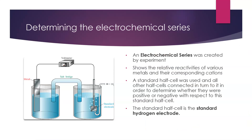In order to map out the reactivity of these metals and their ions, the electrochemical series was created. It was done experimentally and it shows the relative reactivities of various metals and their corresponding cations — that is, half cells that contain a redox pair. It was created by comparing each to a standard half cell, set up as the comparison point and marked at zero, with all other half cells connected to it and measured against that.